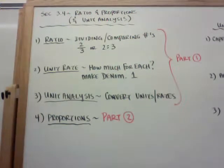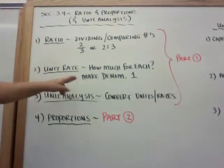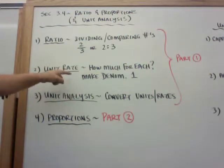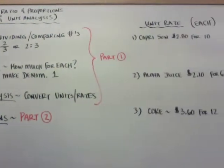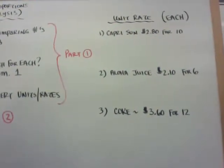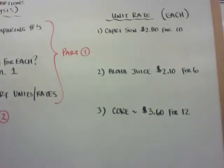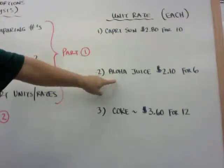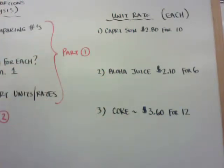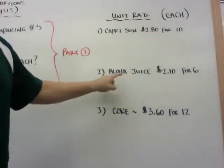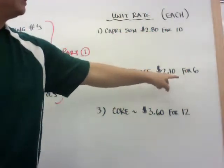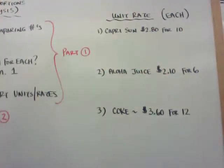Unit rate is when you want to find out how much it is for each one, so you make your denominator equal to one. So an example here — I'm rolling this so I can make the numbers bigger, I know the last couple of videos were small. I have a unit rate here, and I want to find out: is Capri Sun, Aloha Juice, or Coke the cheapest for each one? Capri Sun comes in 10 packs for $2.80, Aloha Juice is 6 packs for $2.10, and Coke comes in a 12 pack for $3.60.